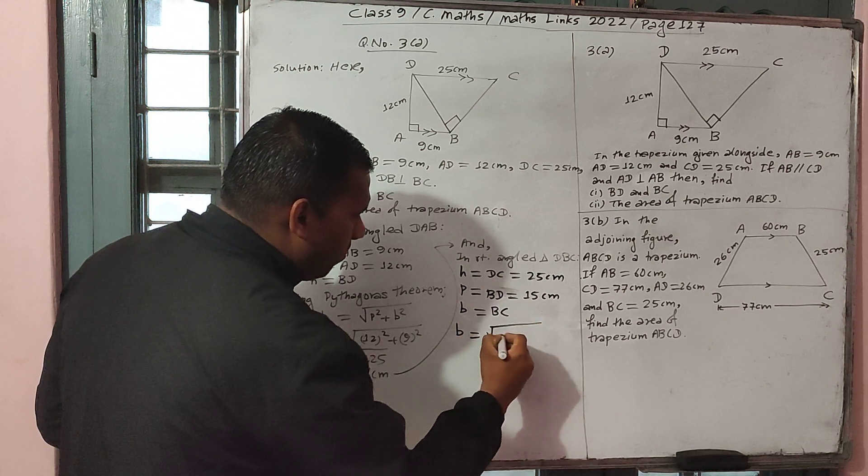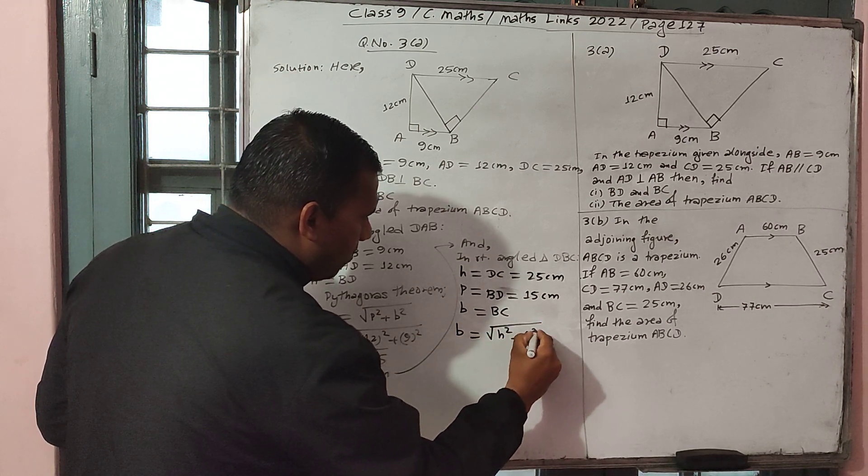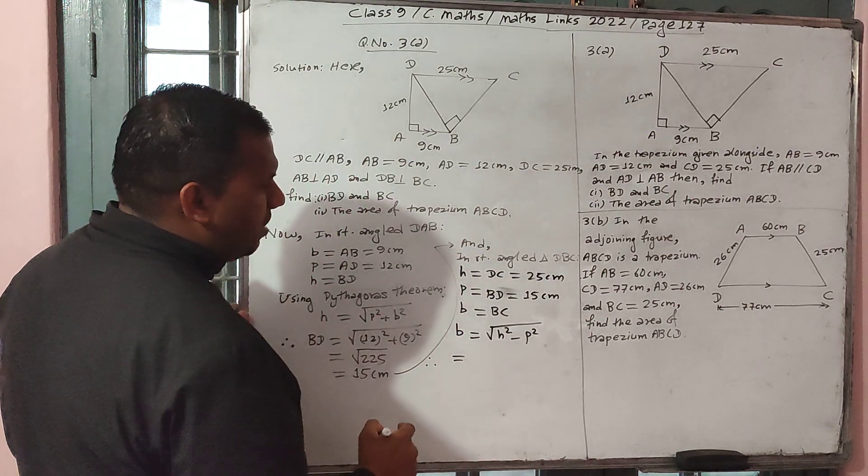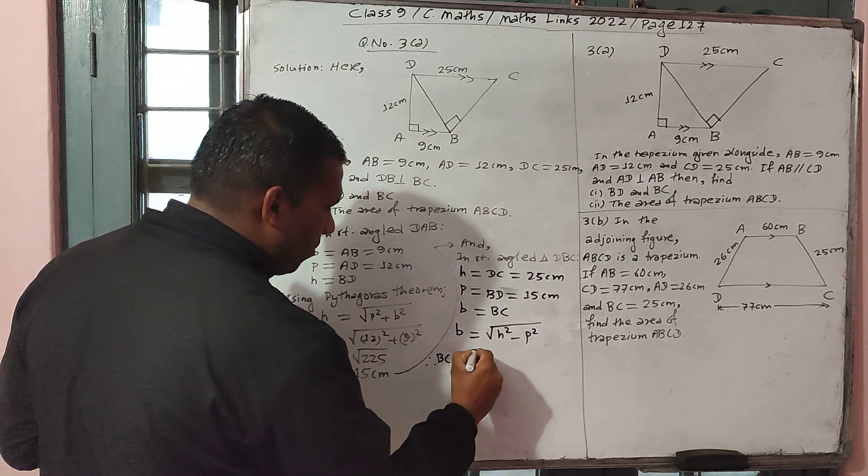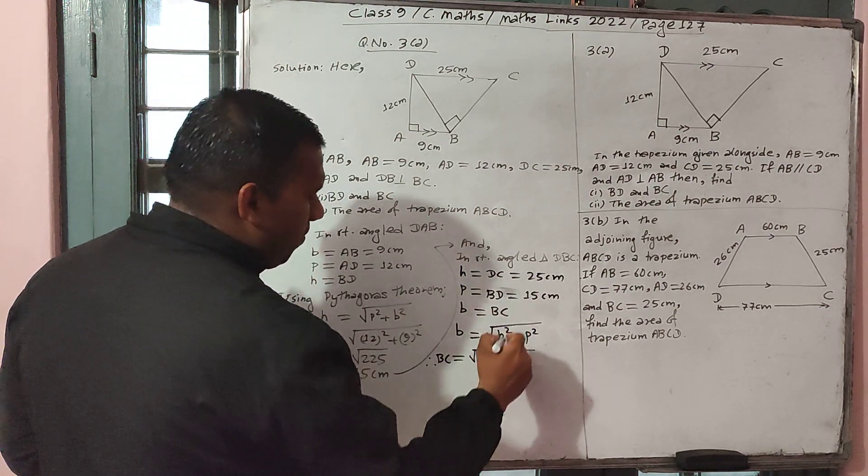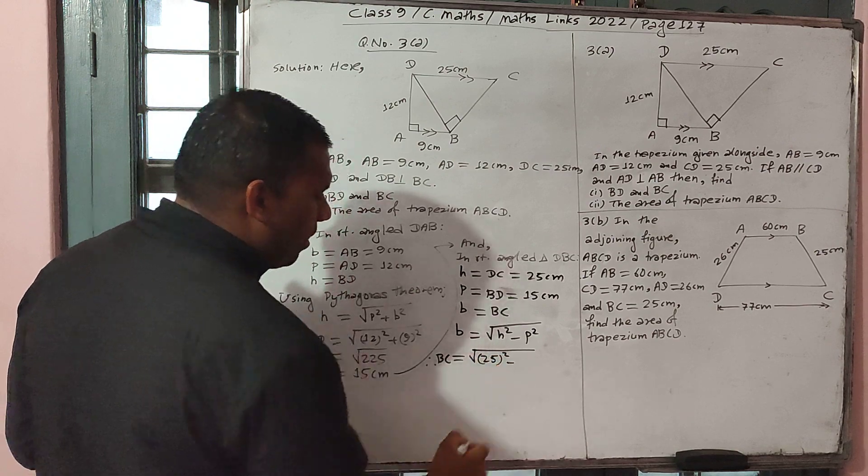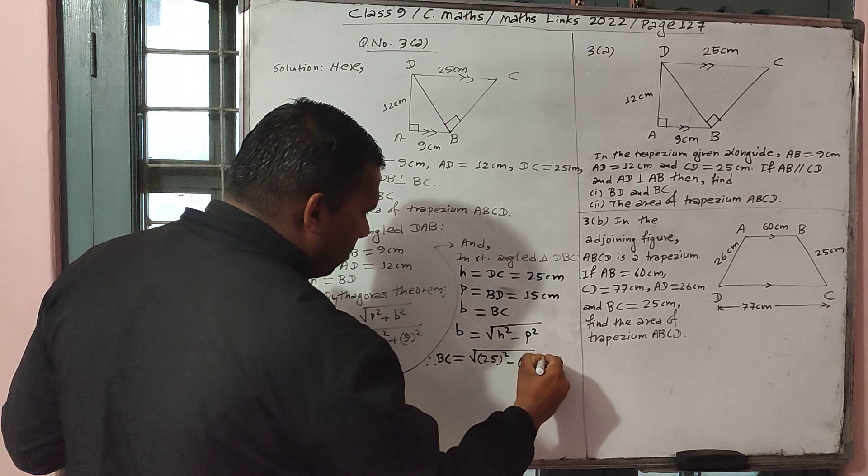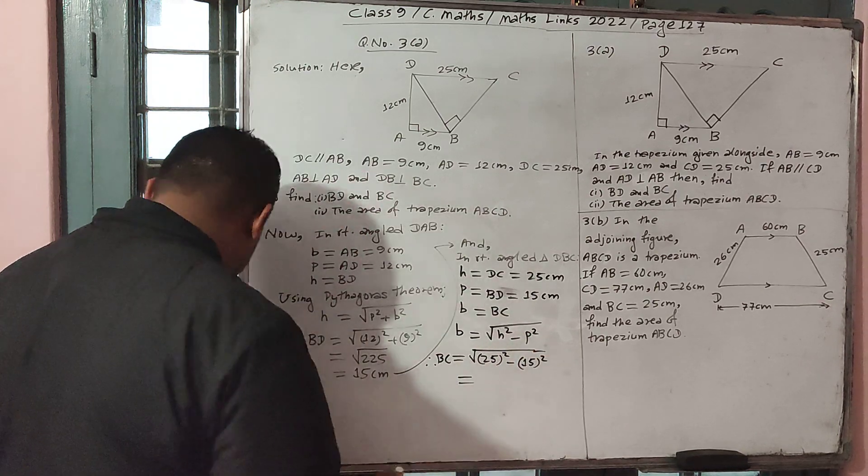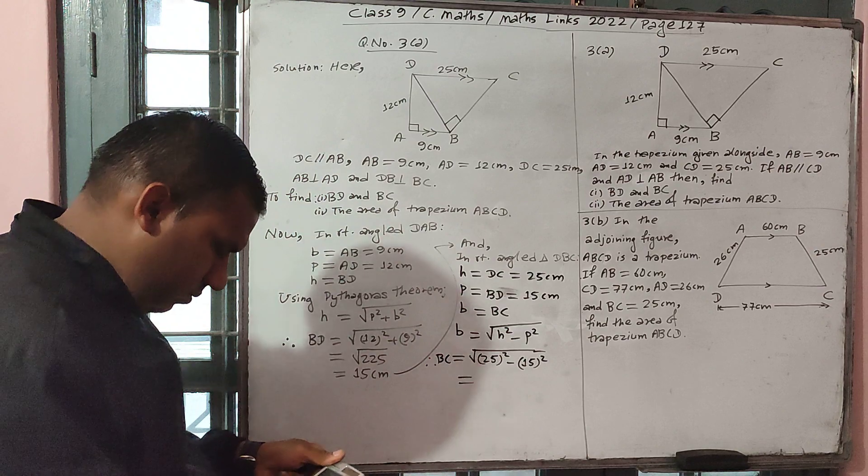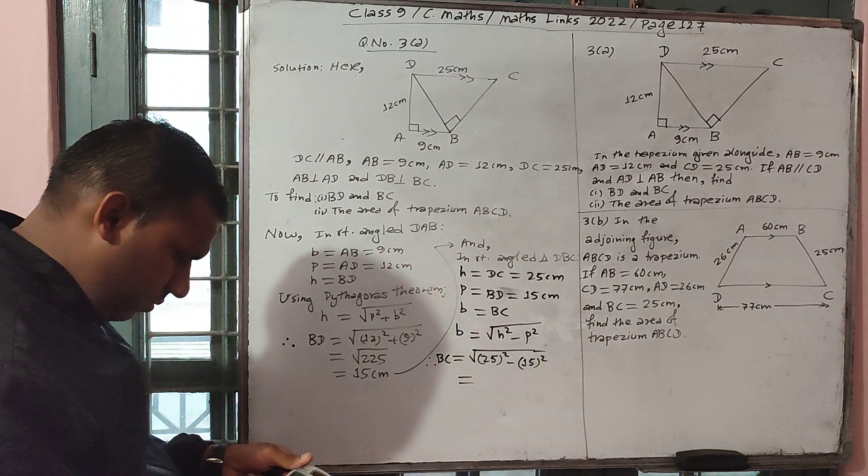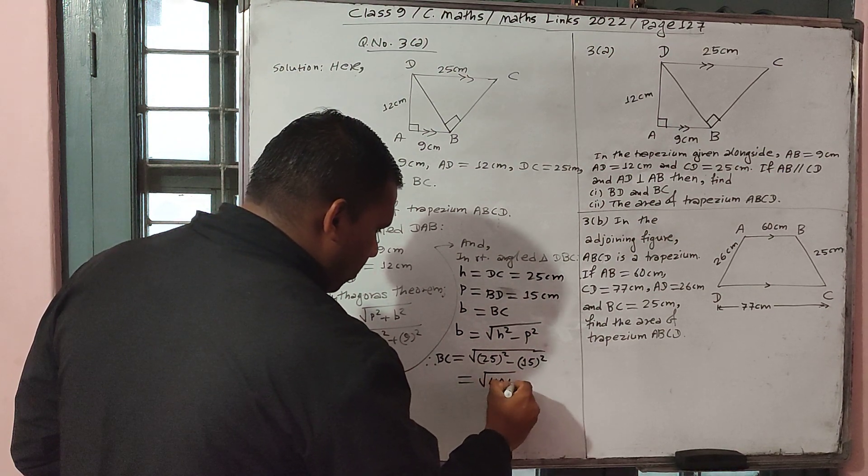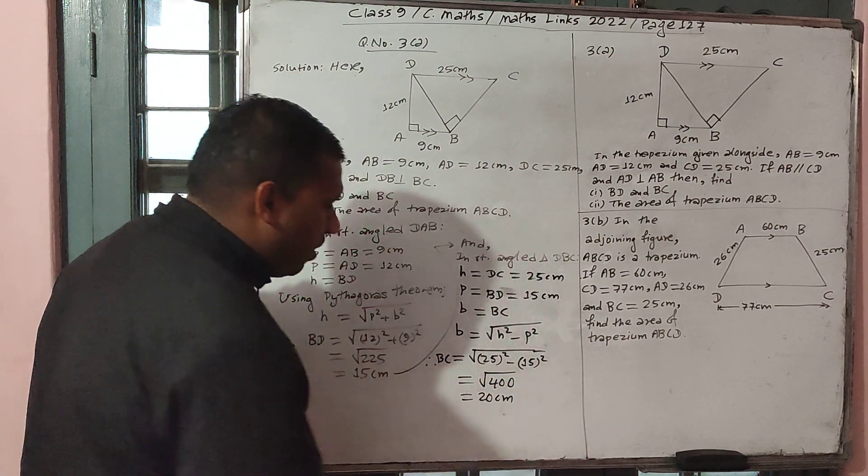Again using Pythagoras theorem, B equal to square root of H square minus P square. Therefore BC equal to square root of 25 square minus 15 square. Now it becomes square root of 400, that is 20 centimeter.